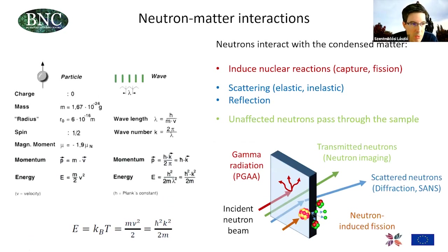As you probably heard already, neutrons have a dual nature. They can act either as a particle or as a wave and we have a portfolio of methods that can take advantage of these properties. Neutrons can interact with material either by inducing nuclear reactions like neutron capture or neutron-induced fission, or scattering or reflection, or the unaffected neutrons just pass through the sample.